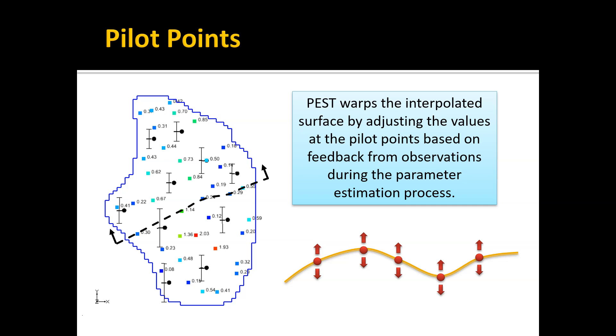As PEST moves those points up and down during the parameter estimation process, it iteratively perturbs or warps that surface until it comes up with a spatial variation of hydraulic conductivity that results in an optimal match between the simulated head values and the observed head values at monitoring wells. It works really well.